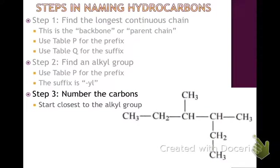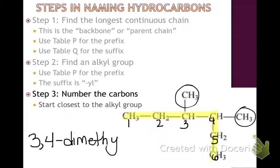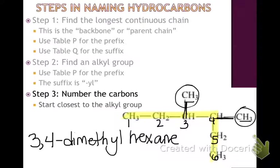Step 3: we'll number the carbons. Here's the main carbon chain — we want to start closest to the alkyl groups. In this case, either direction is fine, so I'll start from the left: 1, 2, 3, 4, 5, and 6. We have an alkyl group at 3 and another alkyl group at 4, so we write 3,4-. Since there are two methyl groups, we name them "dimethyl". The full name of the parent chain is hexane, giving us 3,4-dimethylhexane.